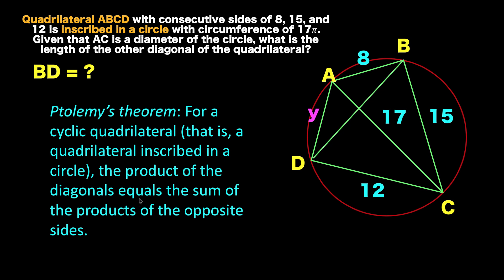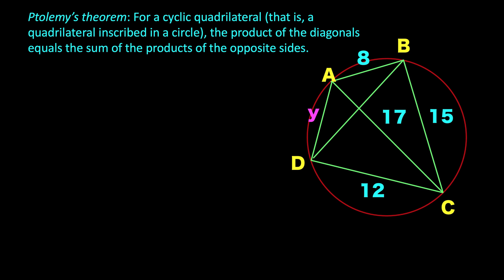Their product is equal to the sum of the products of the opposite sides. The opposite sides are AB and DC, and AD and BC. So, using Ptolemy's Theorem, we can now solve this problem.